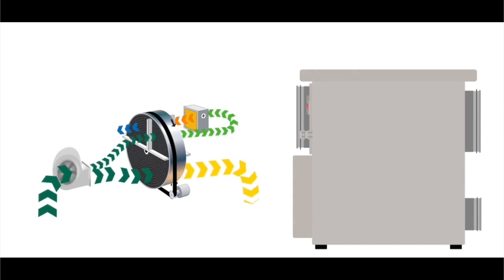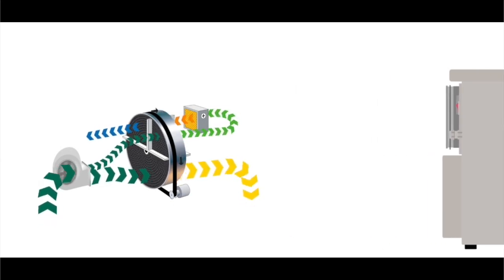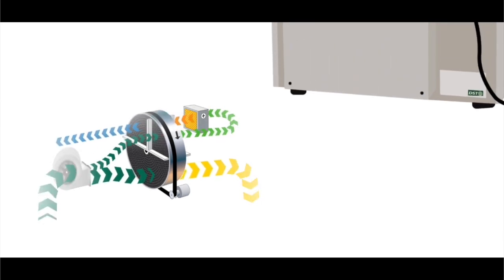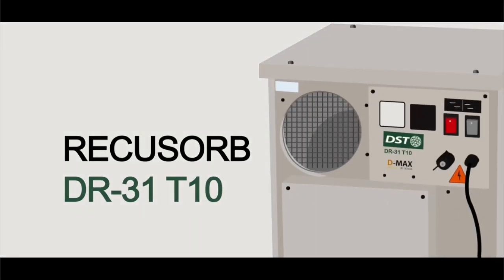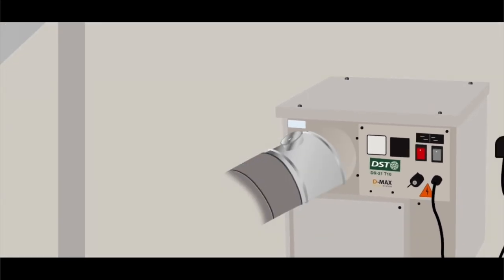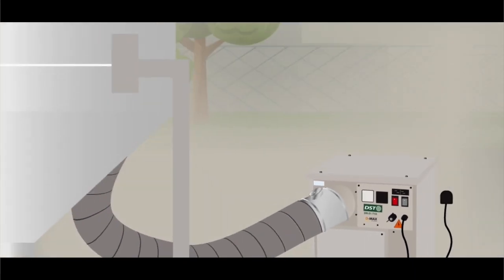Desiccant dehumidifiers are suited to address this humidity issue, especially in the eulage space. With a DST DR31 T10 unit, we can effectively regulate humidity with most silos.